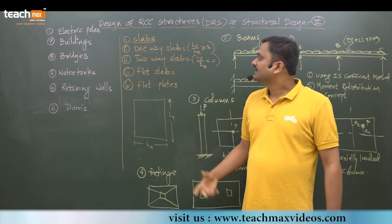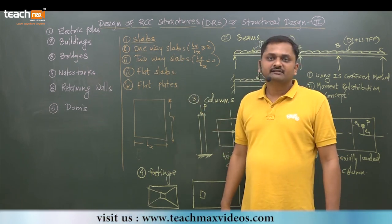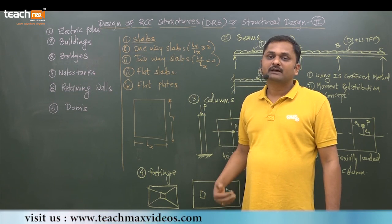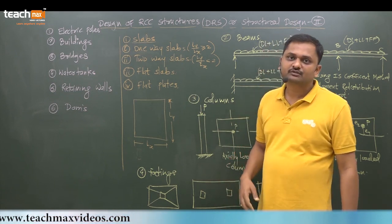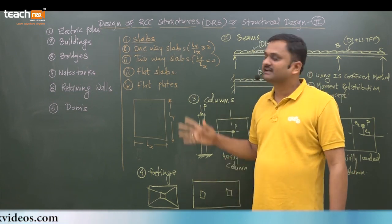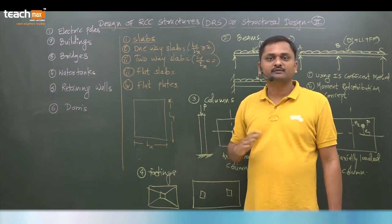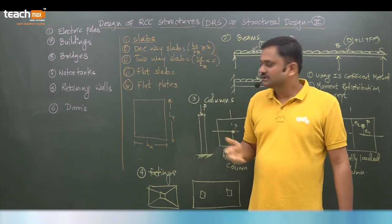For two-way slab, if Ly by Lx ratio, means longer dimension to shorter dimension ratio, is less than two, we can go with two-way slab where we provide the reinforcement in both directions.